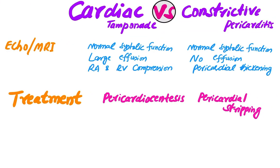On echo and MRI: in cardiac tamponade, there is normal systolic function, a large effusion around the heart in the pericardial sac, and right atrium and right ventricle compression can be observed. In constrictive pericarditis, systolic function is also normal, there is no effusion, and there will be pericardial thickening.